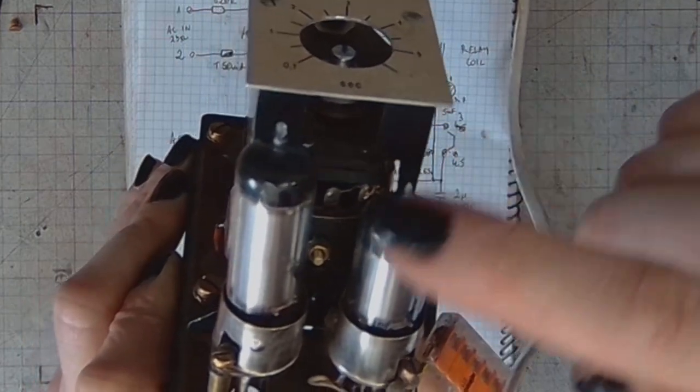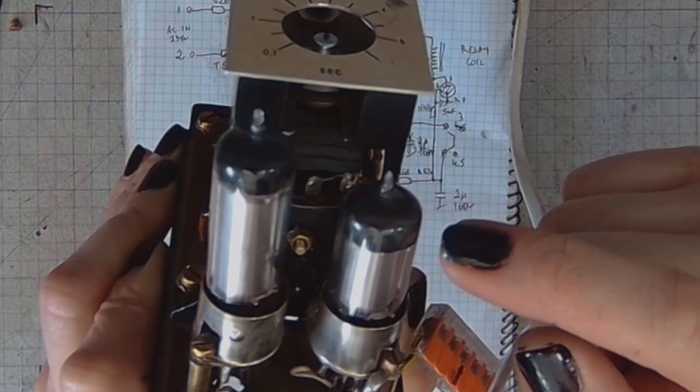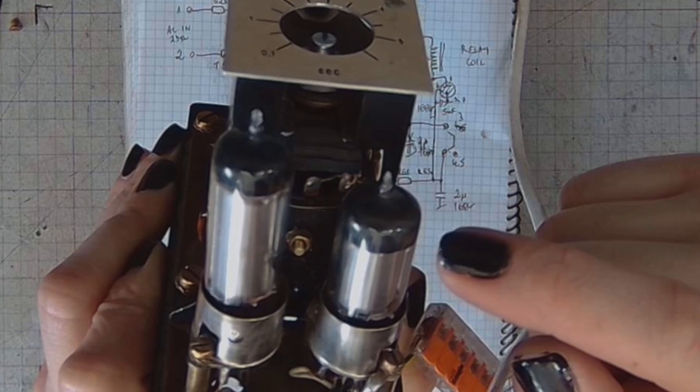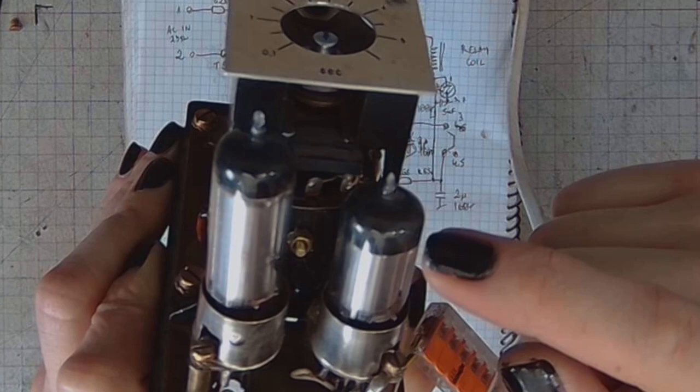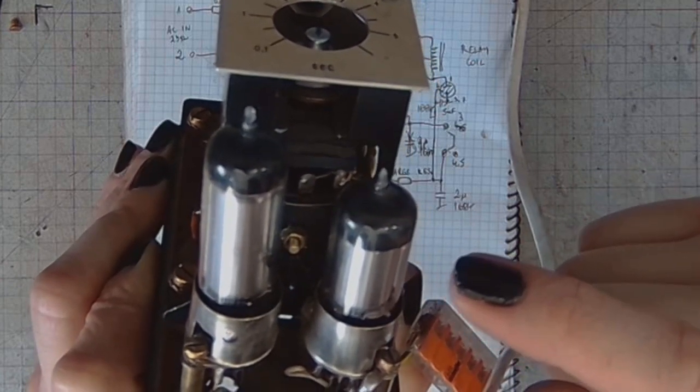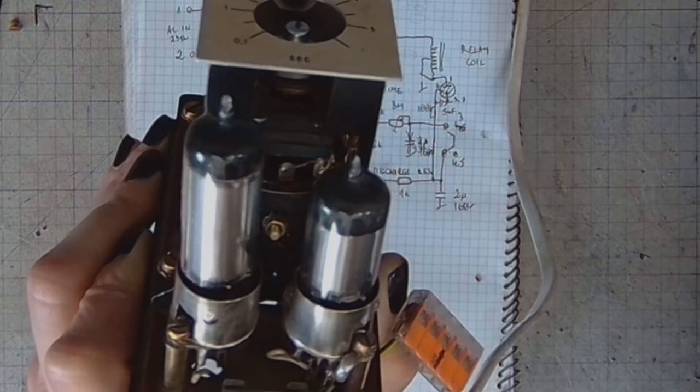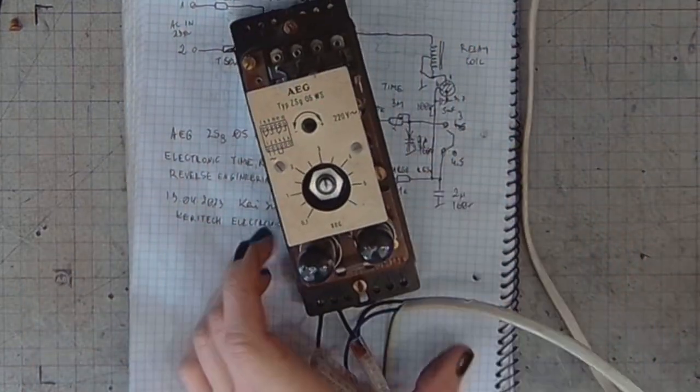The voltage regulator tube is glowing. And now the thyratron fired. It's pretty badly discalibrated.